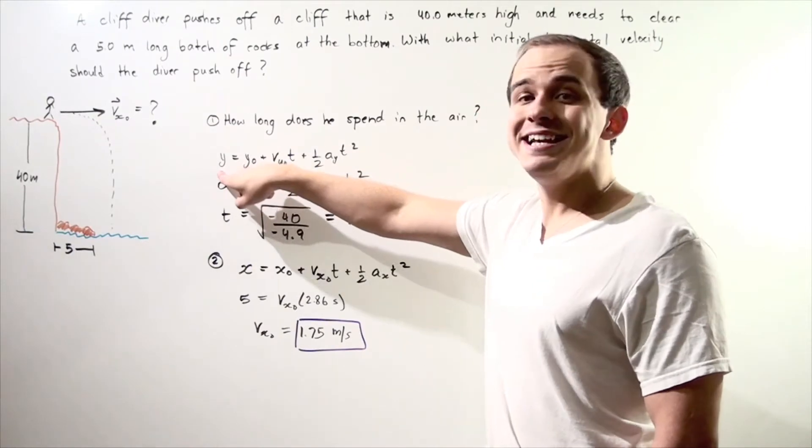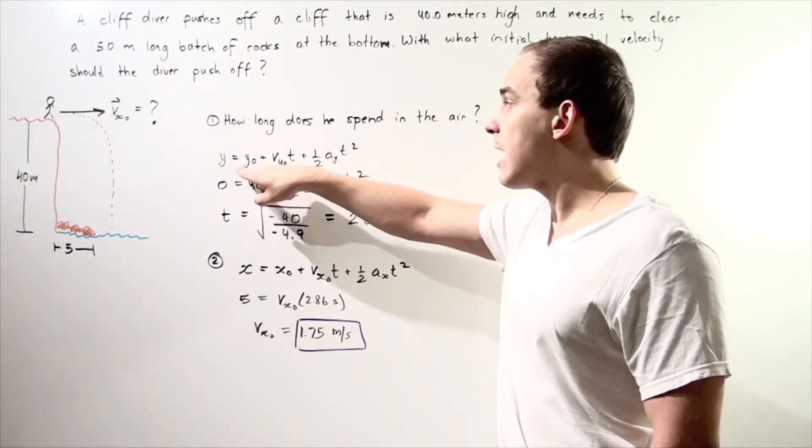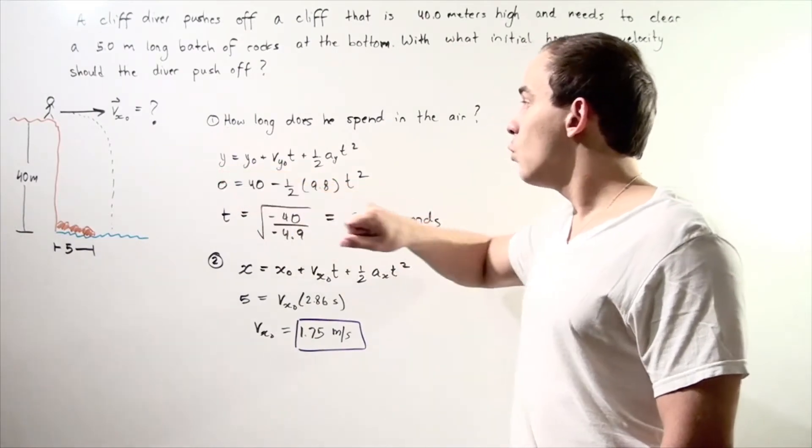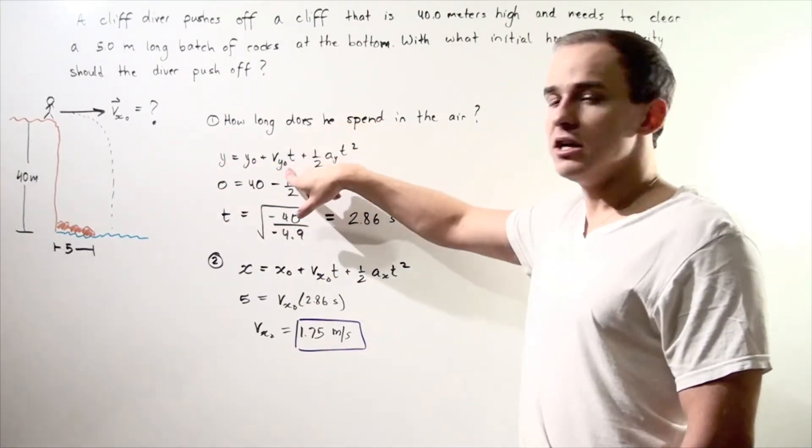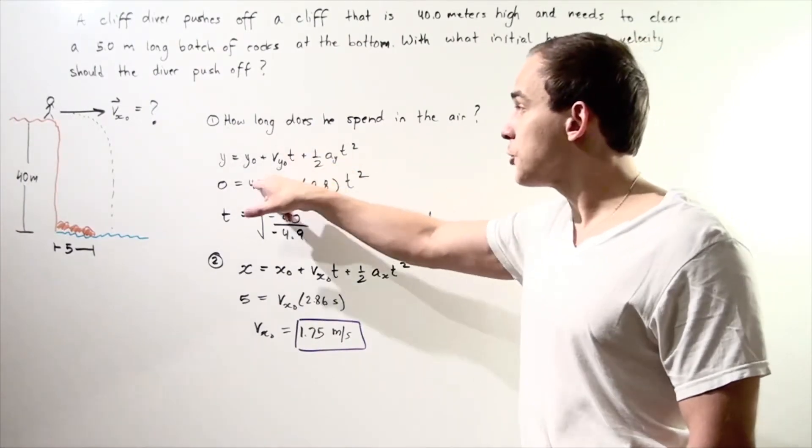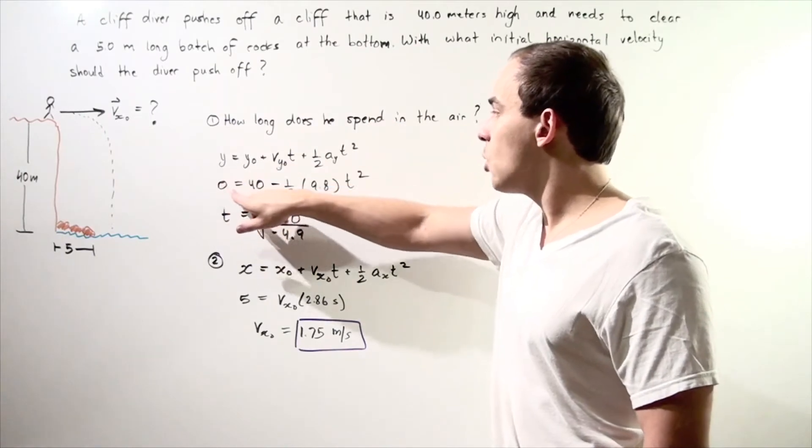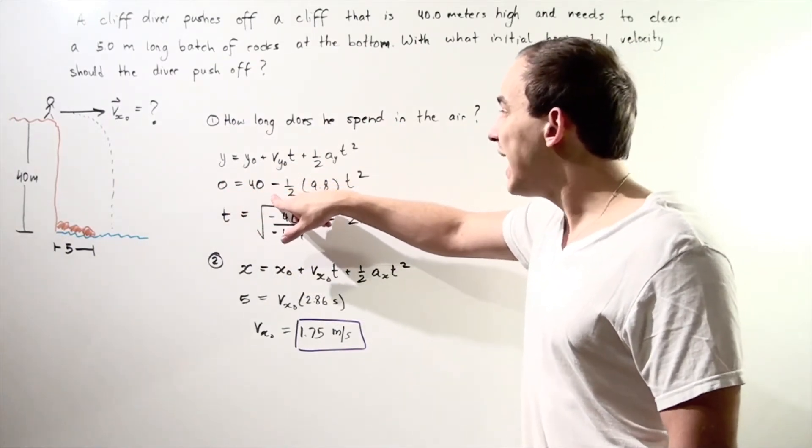We know that our initial position along the y-axis is 40, our final position is 0. We know that our initial velocity along the y-axis is 0, so this term cancels. This term is 0. So we have 0 equals 40 minus,